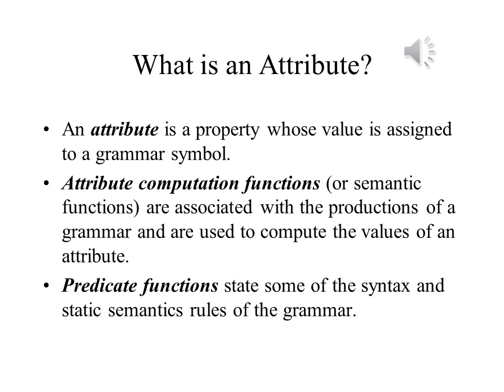An attribute is a property that is associated with a symbol in the grammar. It can be, for example, the data type of a variable, its value, or its address in memory. Attribute Grammars make use of two types of functions: Attribute Computation Functions, which can be used to compute values for the attribute, and Predicate Functions, which state some of the syntax or semantic rules of the grammar.